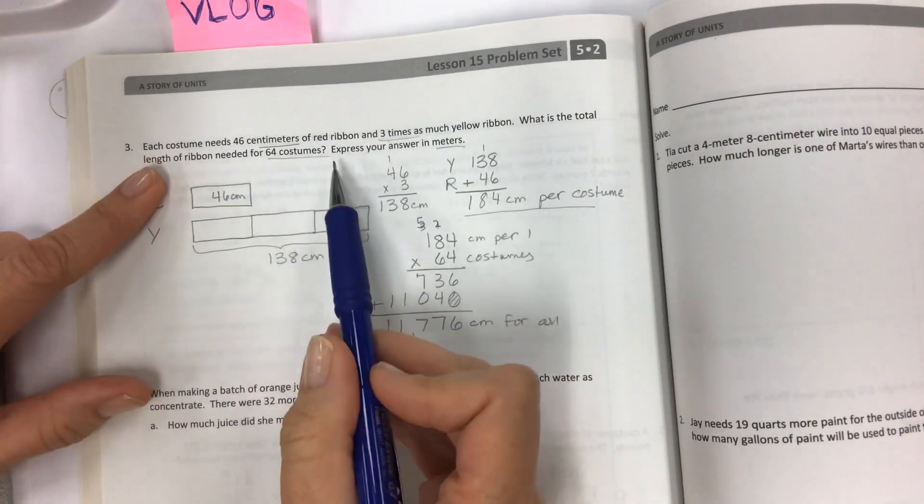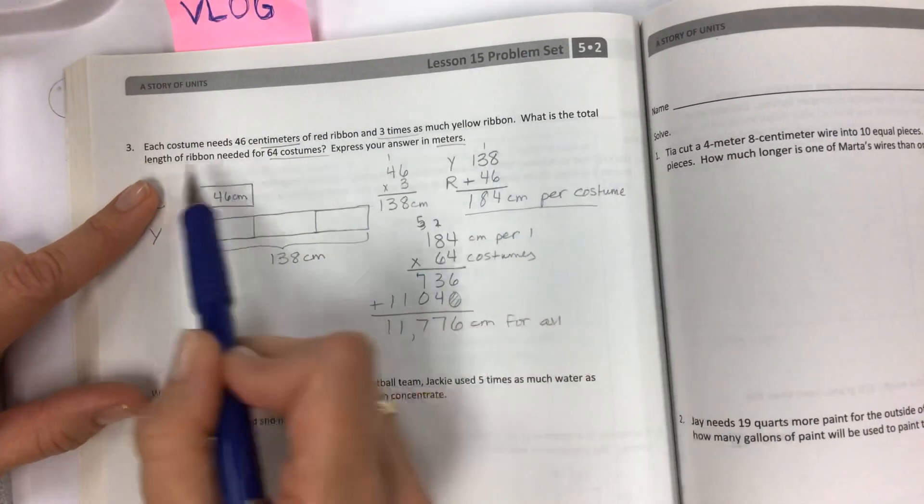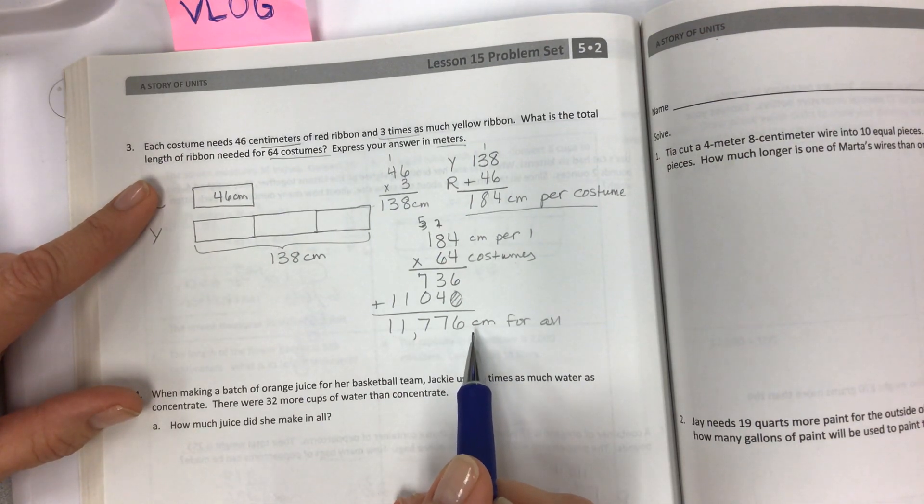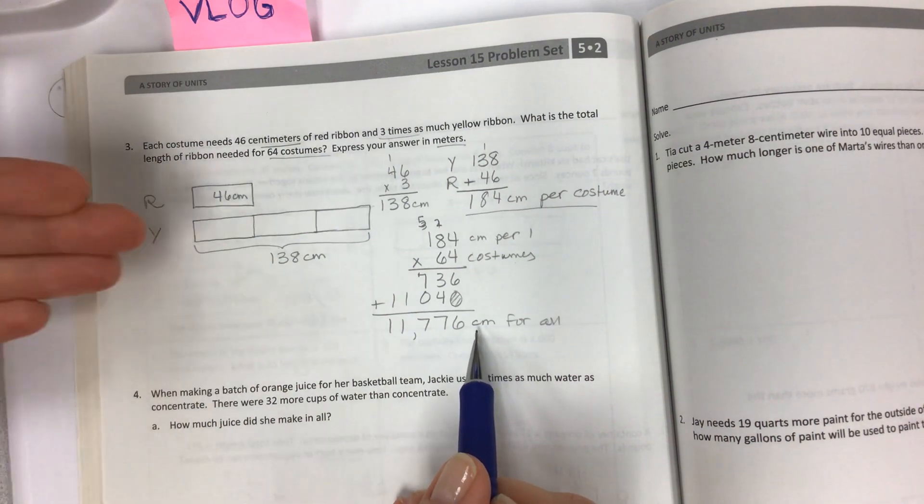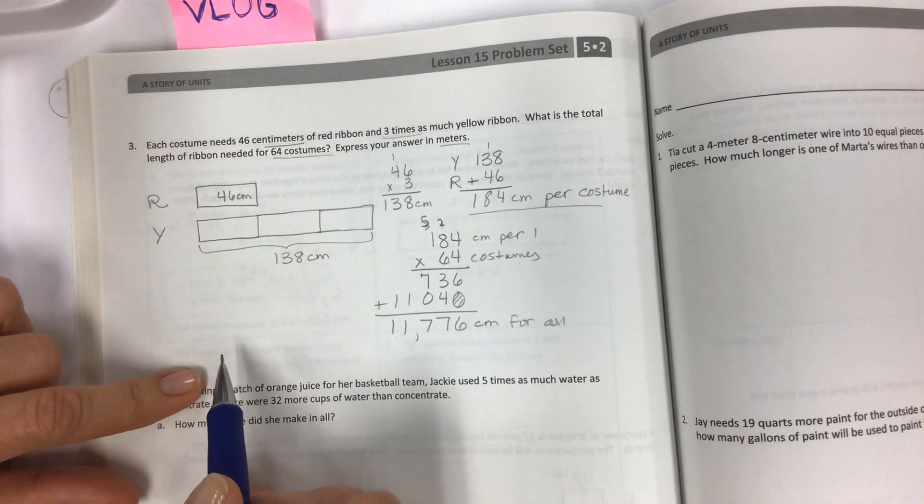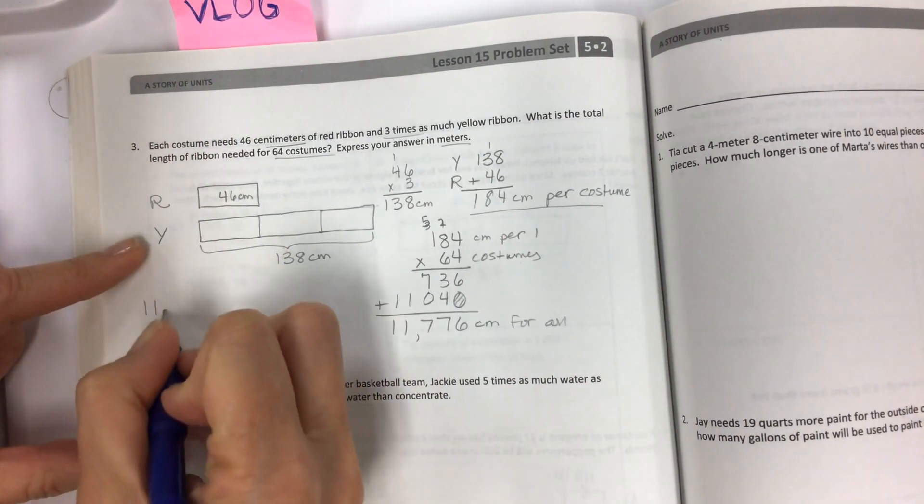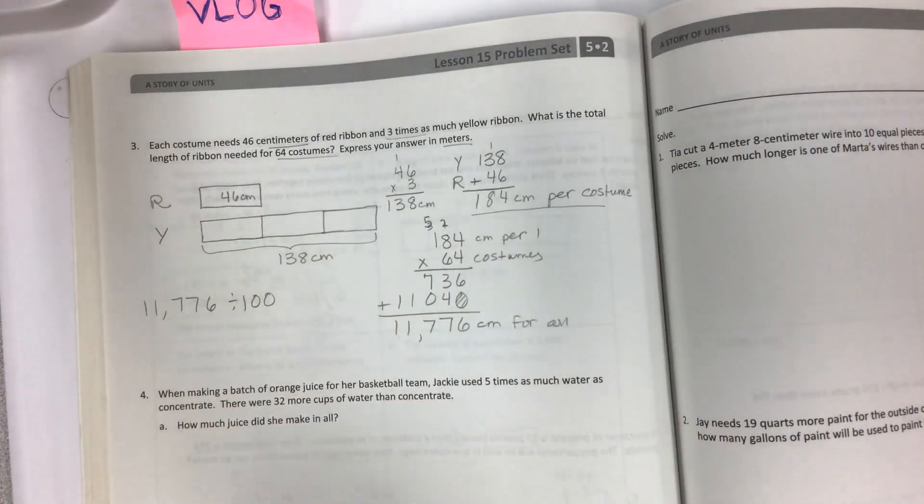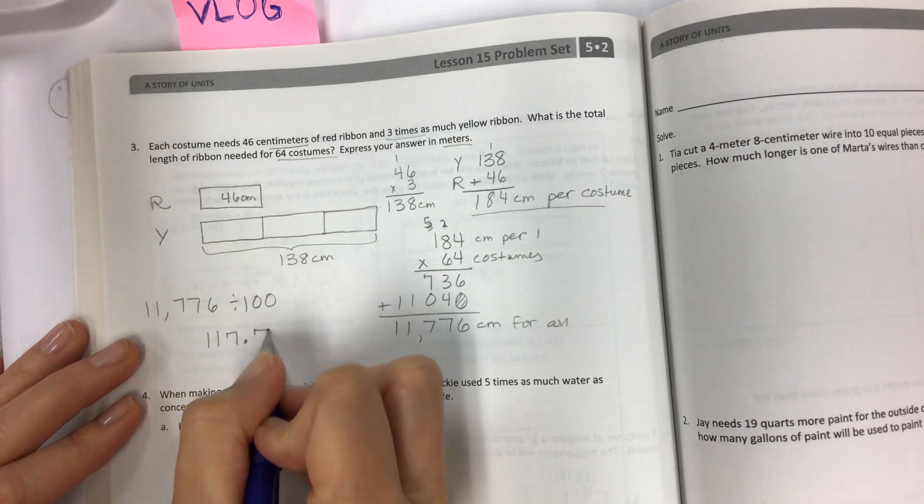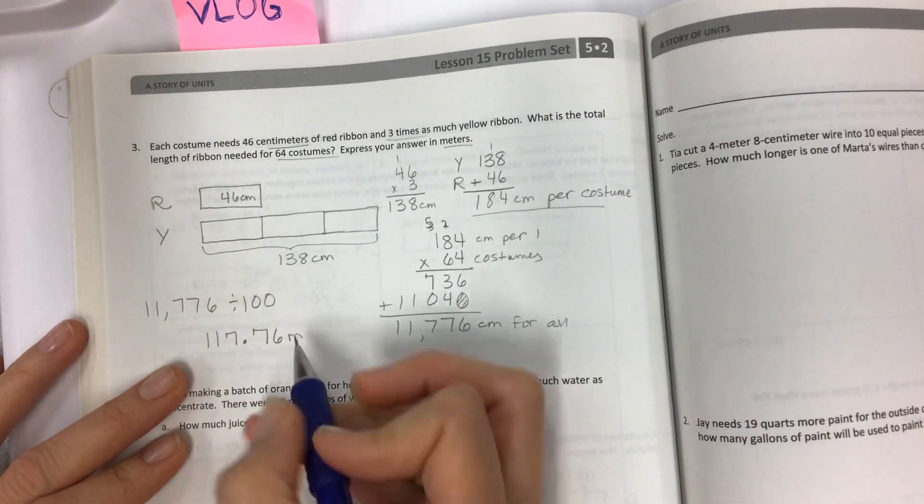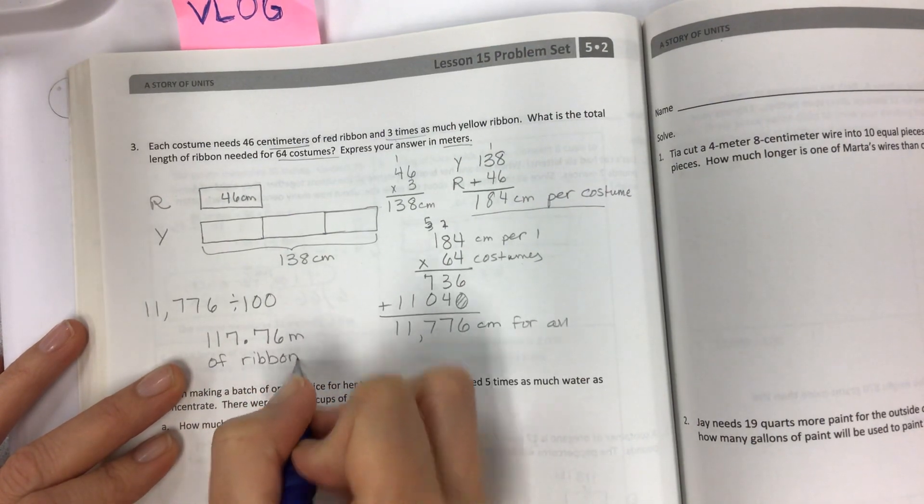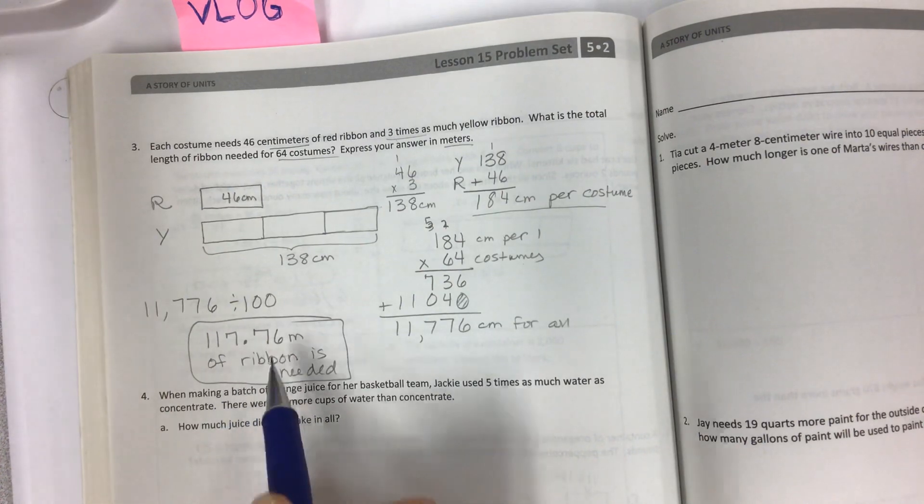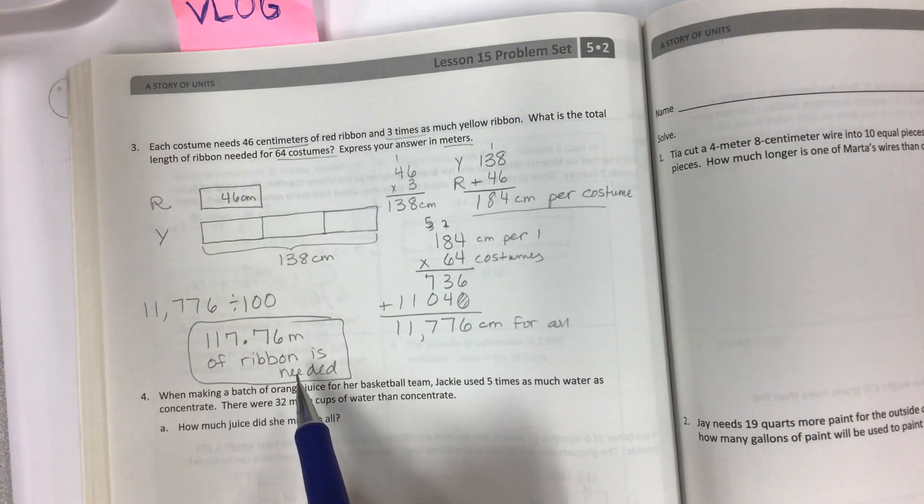But that's centimeters. And now we have to go back to the problem, express your answer in meters. If I have centimeters, King Henry died unexpectedly, drinking chocolate milk. And I have to go to the meters unexpectedly. That's two place value positions away. And it's to a larger unit, so you need fewer. So you're going to take your 11,776, divide by 100, and shift to 117.76 meters of ribbon is needed for all 64 costumes.